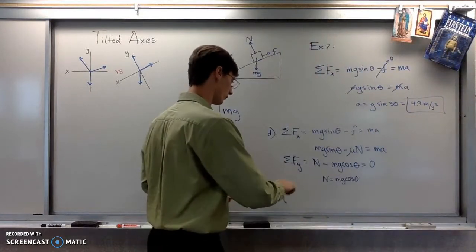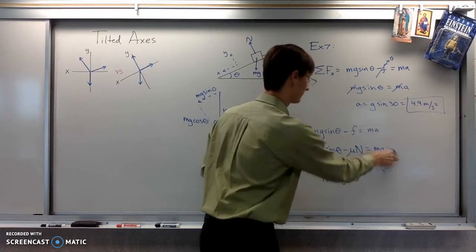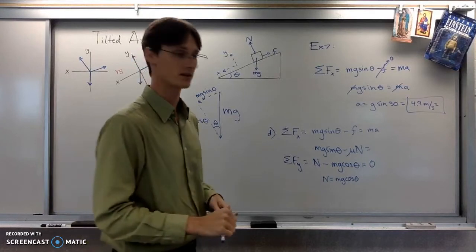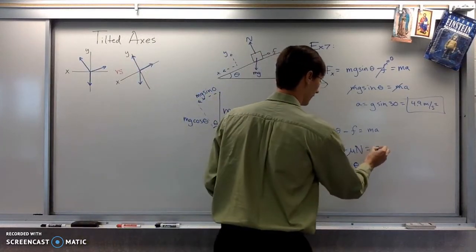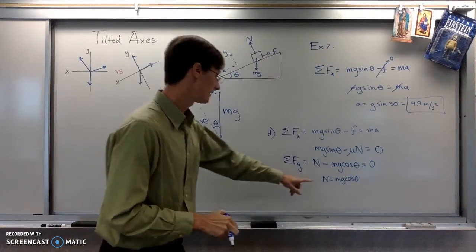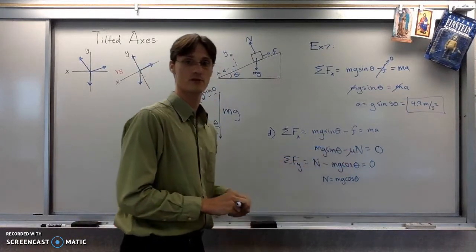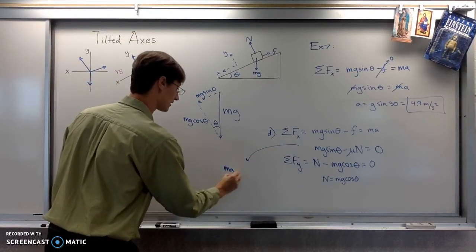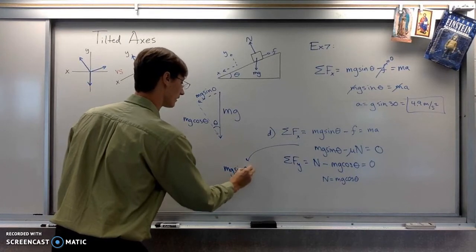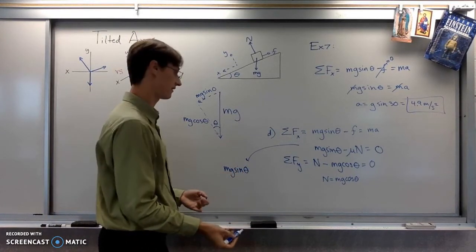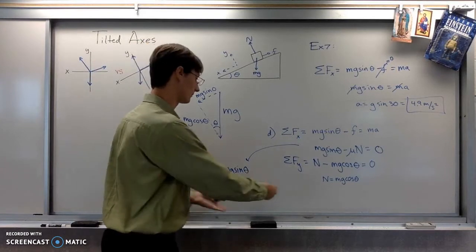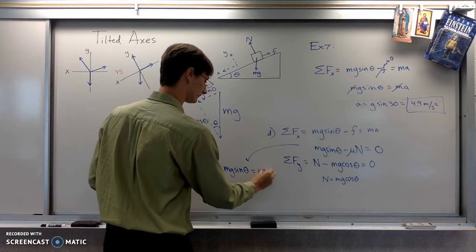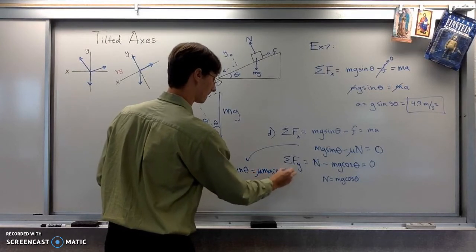All right. Oh, I made one goof here. Maybe you noticed it already. It's saying it's in equilibrium. It's sitting on the surface, trying to slide down, but failing. So zero. All right. Now we can plug this in up here for the normal force. So this equation subbing in is going to give us mg sine theta minus mu mg cosine theta equals zero. So I'll move that over.